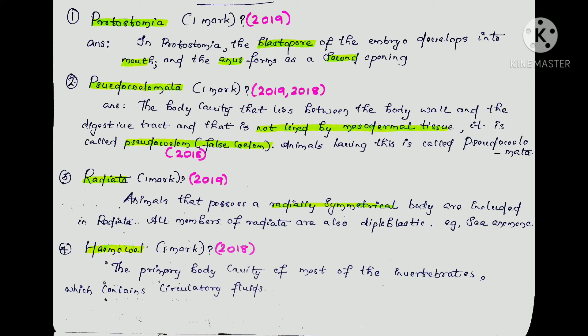Now, the next question is Radiata, which was asked in 2019. The animals that possess a radially symmetrical body are included in the Radiata group. All members of Radiata are also diploblastic — for example, Cnidaria animals. This is worth one mark.